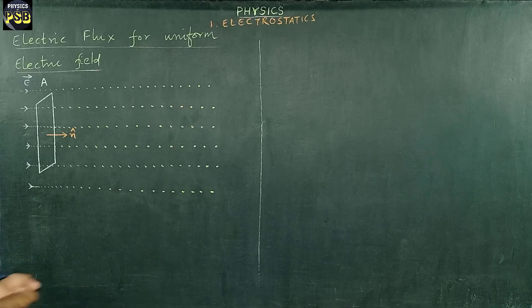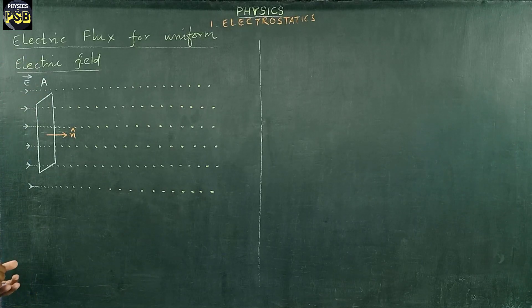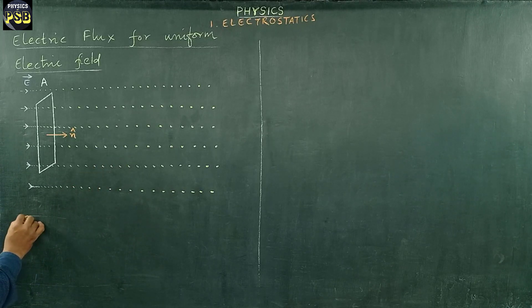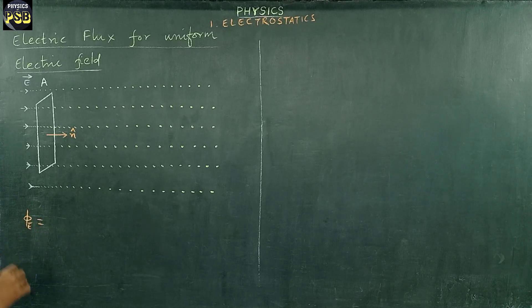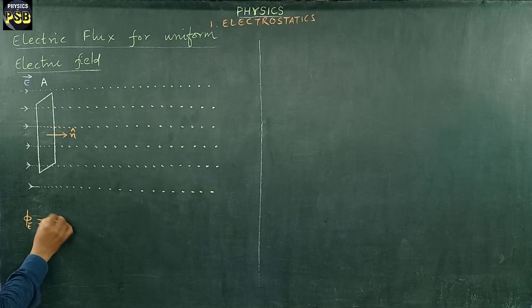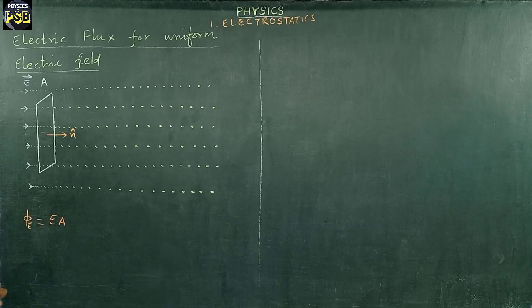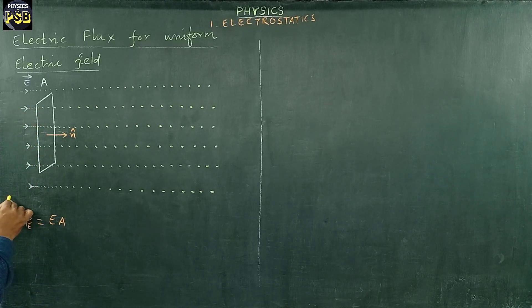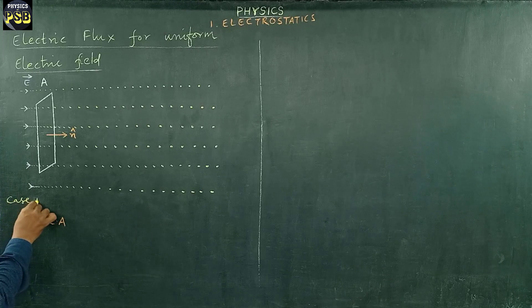If we multiply the magnitude of the electric field with the area, we get electric flux. Electric flux is denoted by the letter φ_E, and is obtained by multiplying the electric field with the area. I take this as Case 1. For Case 1, the electric flux is given by this equation: φ_E = EA.